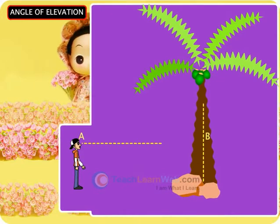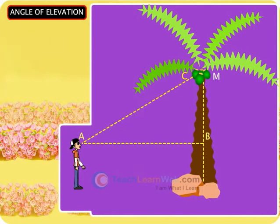in this figure, the line AC drawn from the eye to the top of the tree is called the line of sight.